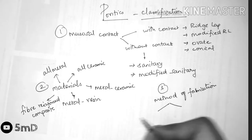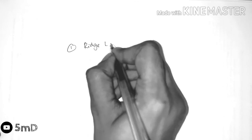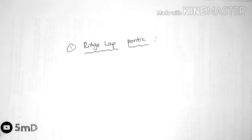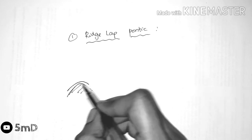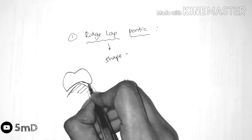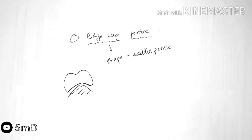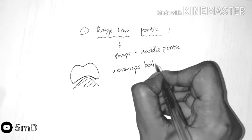Now let us see in detail about the pontics with mucosal contact. The first one being the ridge lap pontic or the saddle pontic. The shape resembles a saddle, therefore it is also known as the saddle pontic. The ridge lap pontic overlaps both the buccal and the lingual ridge of the edentulous ridge, therefore it is known as the ridge lap pontic.